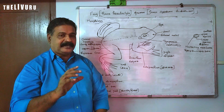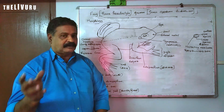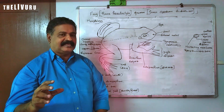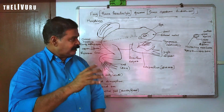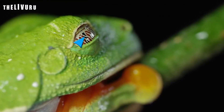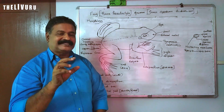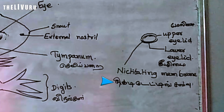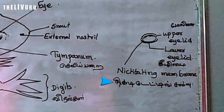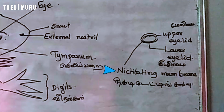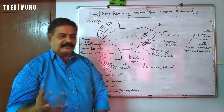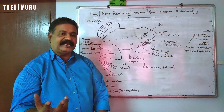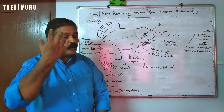The upper eyelid is immovable and the lower eyelid is movable. Apart from that, there is a transparent membrane called the nictitating membrane. When the animal is under water, the nictitating membrane is drawn over the eyes.